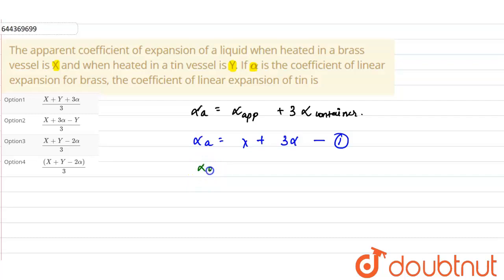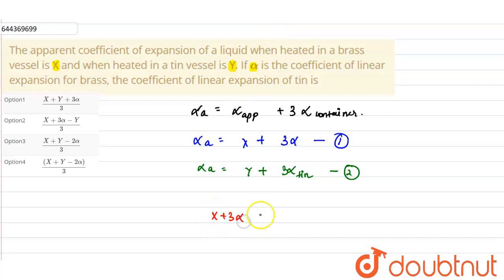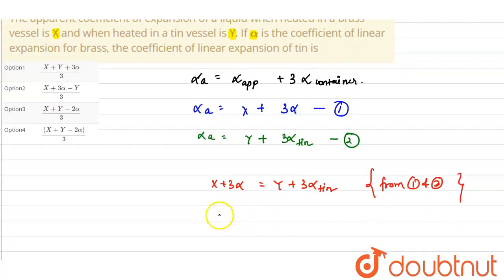For tin, the actual coefficient of expansion will be y + 3α_tin. This is equation 2. From equations 1 and 2, since both equal the actual coefficient, we get x + 3α = y + 3α_tin. Solving, α_tin = (x − y + 3α) / 3.